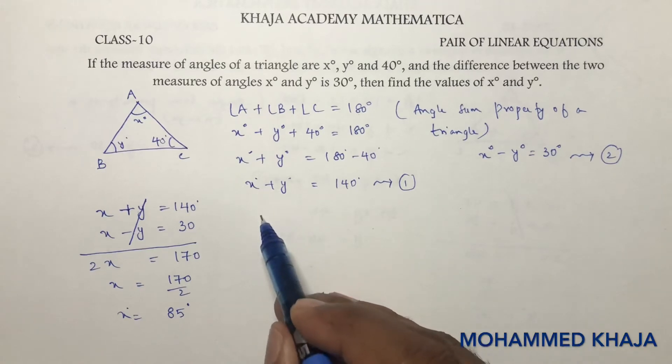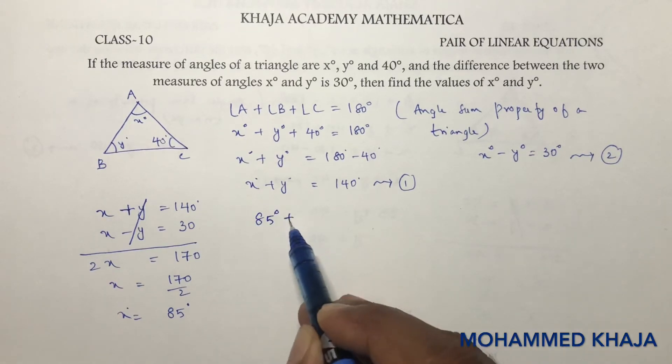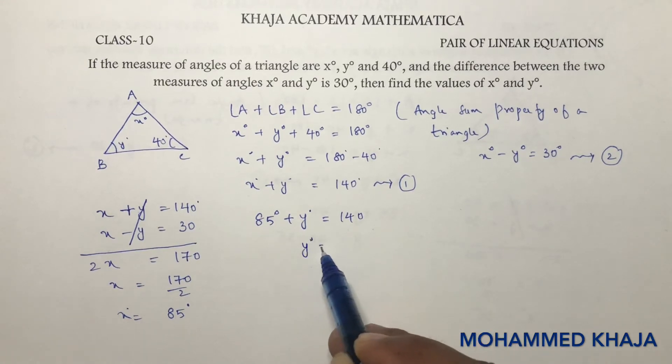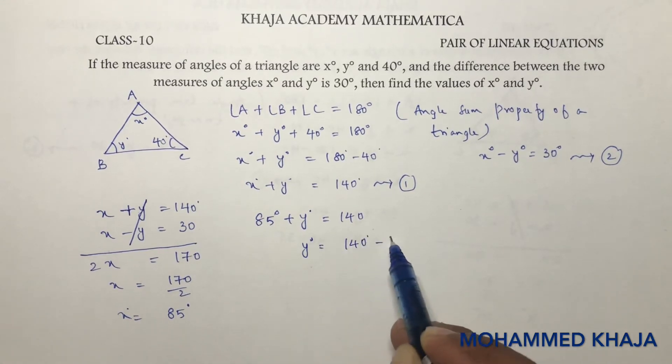Now substitute x in this equation to get the value of y. So 85 degrees plus y equals 140. Therefore, y equals 140 minus 85, which gives us y equals 55 degrees.